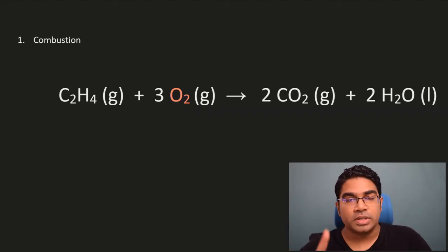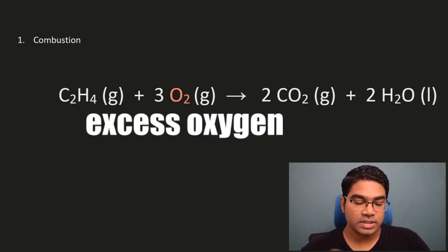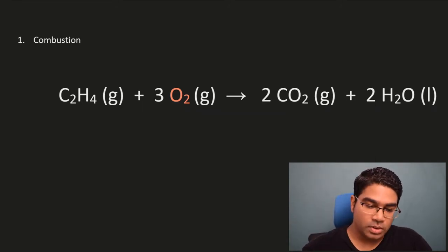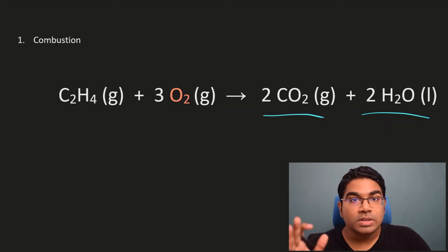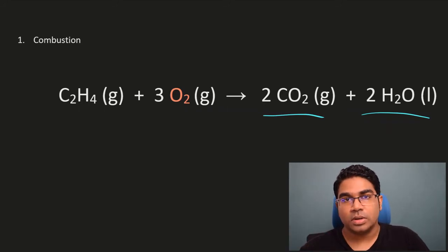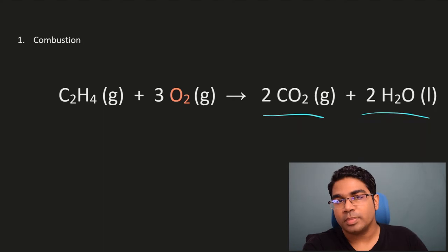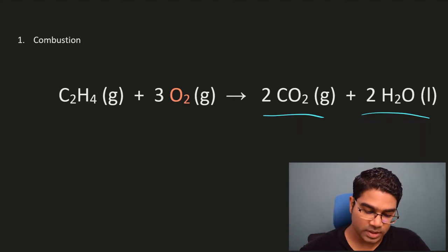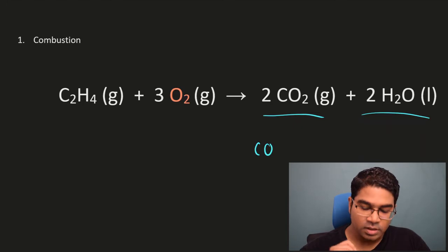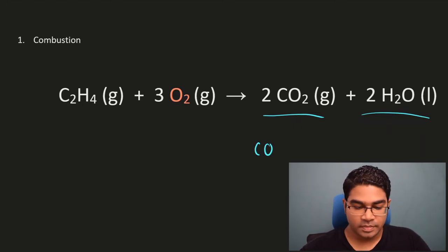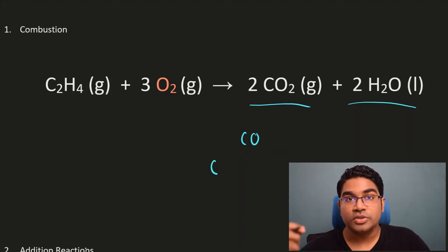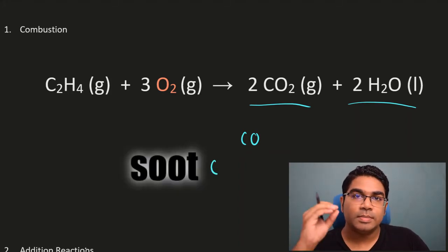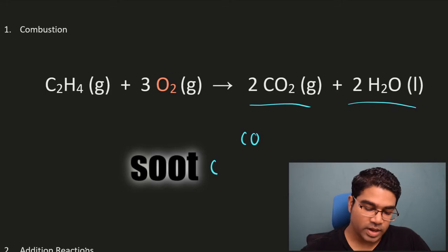However, there is a condition to this — this is in excess oxygen. We only get those two products, carbon dioxide and water, when oxygen is in excess. However, when oxygen is not enough, when there is not enough supply of oxygen to support the combustion, we also get some other products, such as carbon monoxide, which is a poisonous gas. We can also get carbon in the form of soot. If you see black smoke, that is where we have soot — the soot is actually just carbon.